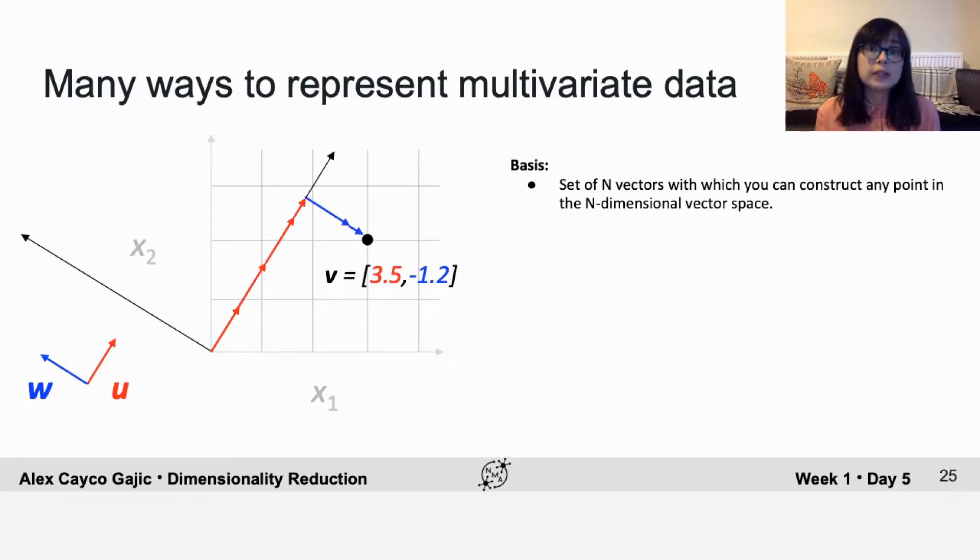But this is not the only basis that we could imagine for this data. So you could rotate these basis vectors and therefore represent this point v as a completely different set of coefficients. So in this case your v would be 3.5 times the vector u minus 1.2 times the vector w.